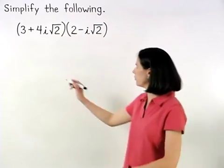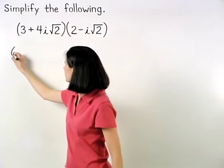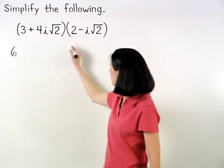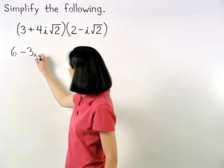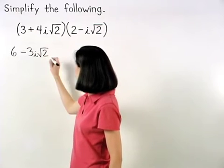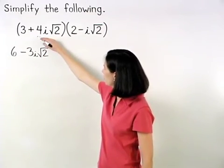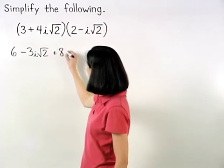The product of the first terms, 3 times 2, is 6. The product of the outer terms, 3 times negative i root 2, is negative 3i root 2. The product of the inner terms, positive 4i root 2 times 2, is positive 8i root 2.